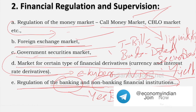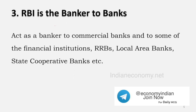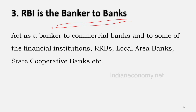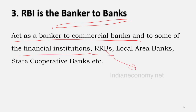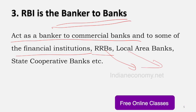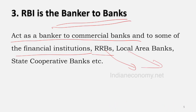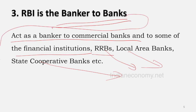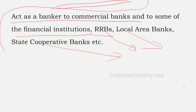The next function of the RBI is that it acts as banker to the banks — to commercial banks and to financial institutions like Regional Rural Banks (RRBs), which are sponsored by commercial banks. RRBs, local area banks, and state cooperative banks are all regulated and supervised by the RBI, and RBI provides the banker-to-bank function to all these institutions.